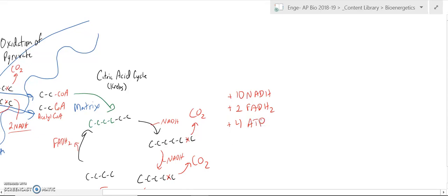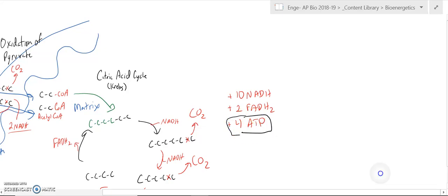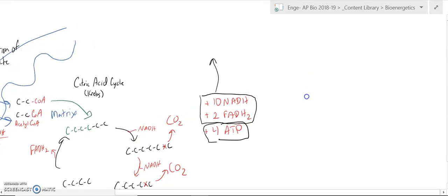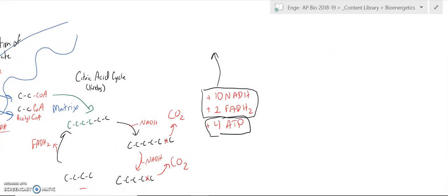Now, the ATP, recall, is relatively unstable, so it needs to be used right away. But the electrons are stored energy that we can now use for the next step.